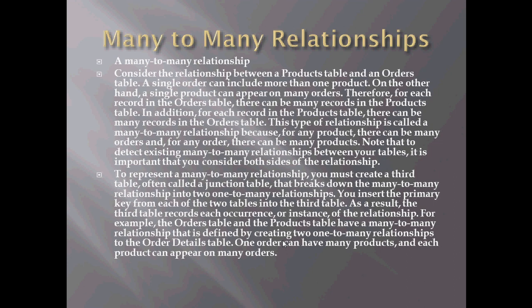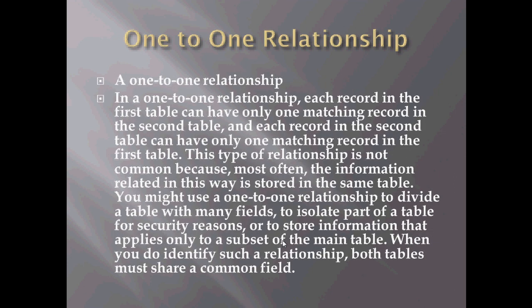A one-to-one relationship, according to Microsoft, means each record in the first table can only have one matching record in the second table, and each record in the second table can only have one matching record in the first table. This type of relationship is not common because most often the information related in this way is stored in the same table. You might use a one-to-one relationship to divide a table with many fields to isolate part of a table for security purposes. This is not used a lot, and there aren't many reasons to use it — it all depends on the information that you're using.